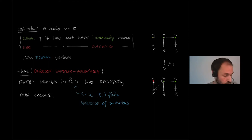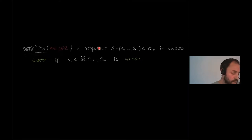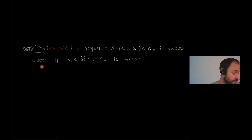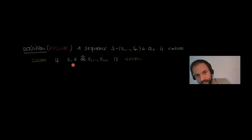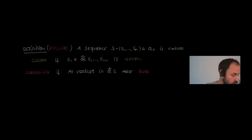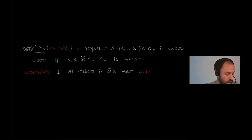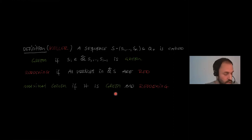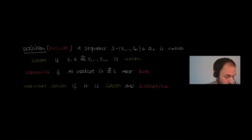Keller defined the following: a sequence of mutation steps is called green if all vertices mutated in the sequence are green at the time of mutation — we only mutate green vertices. A sequence is called reddening if after finishing the sequence everything is red. A maximal green sequence is both green and reddening — so we cannot extend the green sequence further because everything is already red.